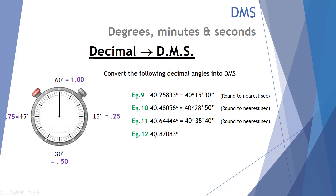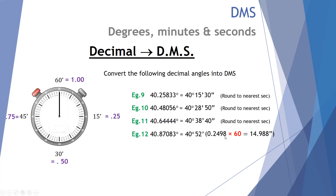Our final manual example: 40.87083 degrees. That's 40 degrees with a leftover 0.87083; times 60 gives 52.248 minutes. The decimal 0.2498 multiplied by 60 gives the corresponding seconds — very close to 15. So it comes out to 40 degrees, 52 minutes and 15 seconds.